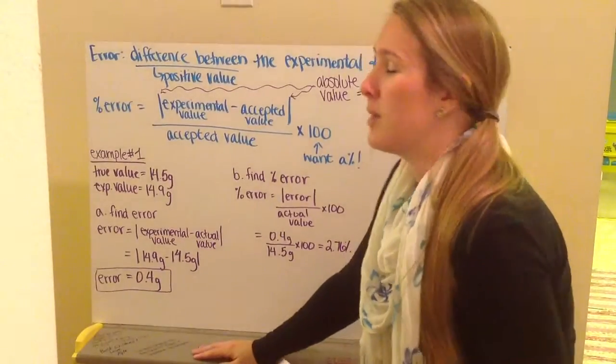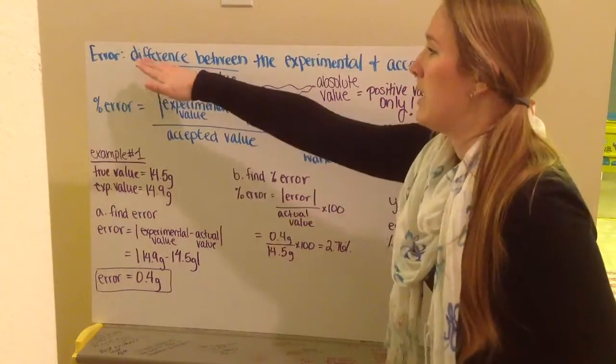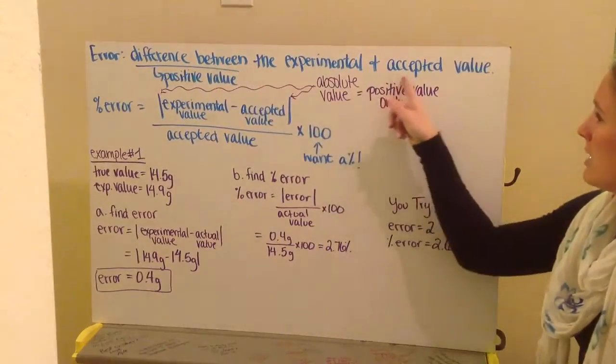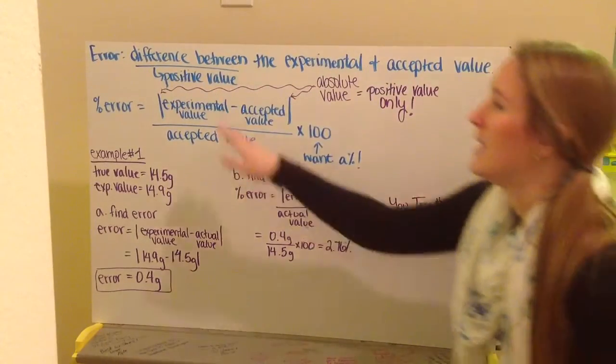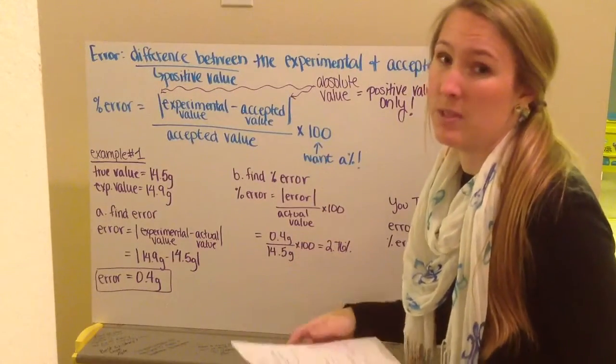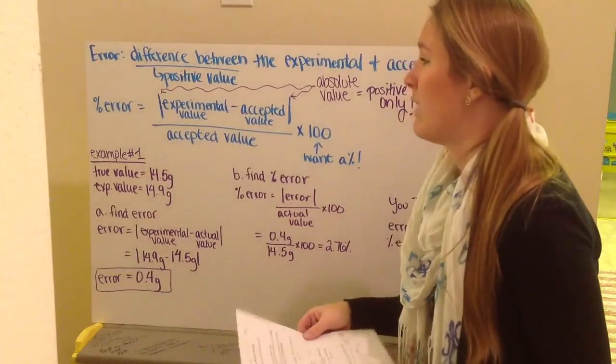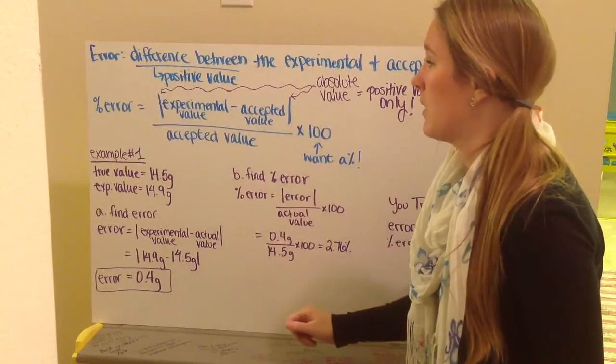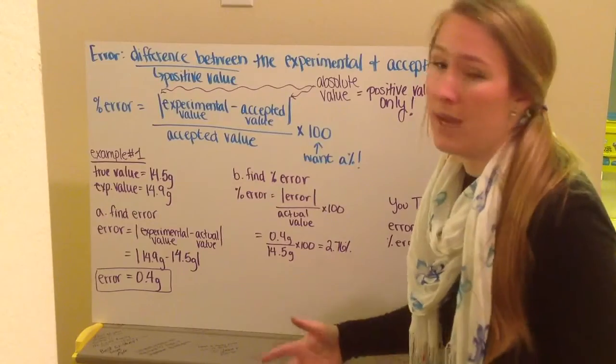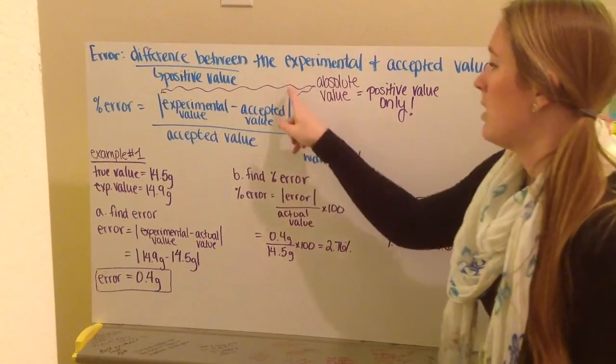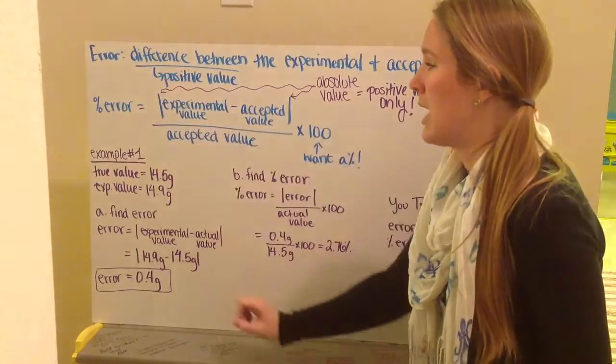Next, what is error and percent error? Well, error is the difference between the experimental and accepted value. Now, when we look at the difference, we just want to know how far away from that accepted value my experimental value is. And this is always a positive number. To determine my difference, I need to use these absolute value signs. They're these straight bars on either side.